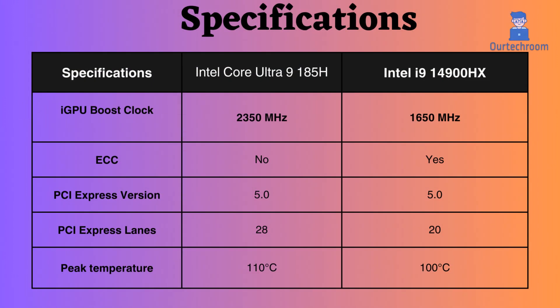The Intel i9-14900HX supports ECC, making it suitable for critical systems like servers and workstations, whereas the Intel Core Ultra 9 does not support ECC. Both processors support PCIe version 5, with the Intel Core Ultra 9 having more PCIe lanes. Additionally, the Intel Core Ultra 9 185H can withstand higher temperatures when the CPU is under load.